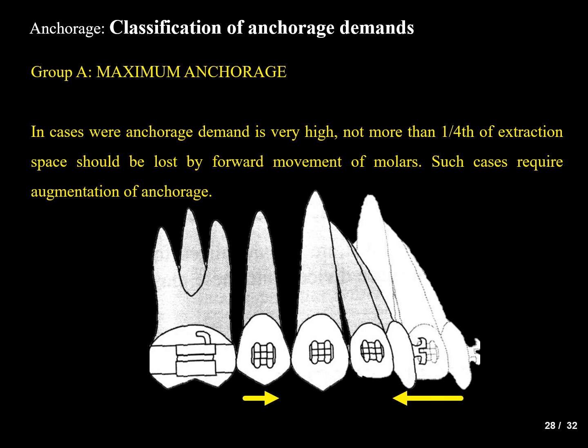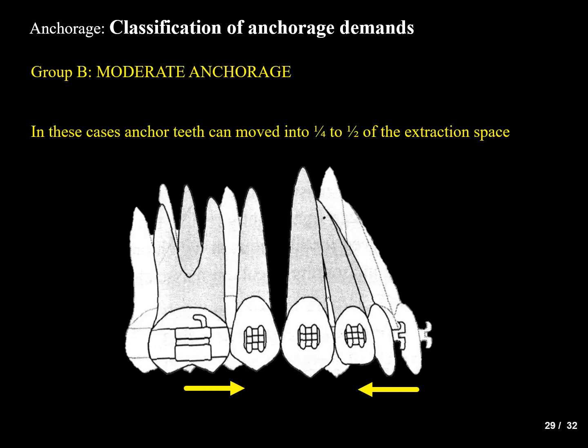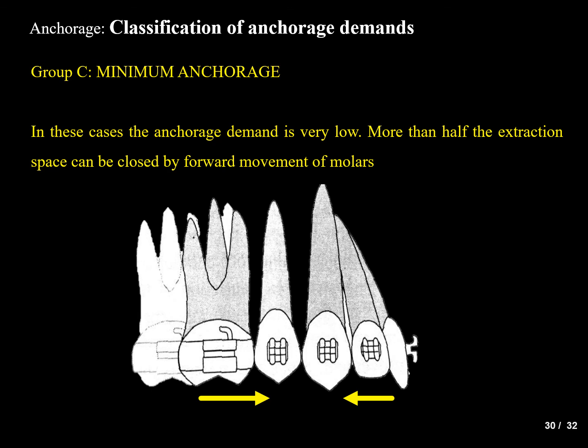In moderate anchorage cases (Group B), the anchor teeth can move one quarter to one half — that is 25 to 50 percent — of the extraction space. The movement of molars and anterior teeth toward each other is similar, meaning both travel a comparable distance to close the extraction space, as seen by equal-length arrows in the image.